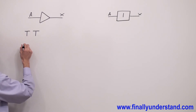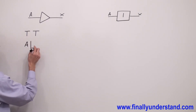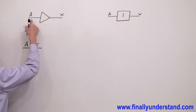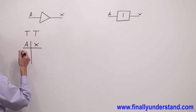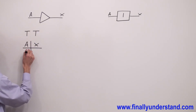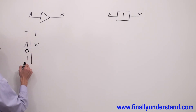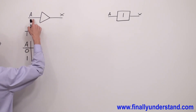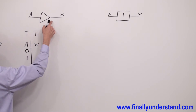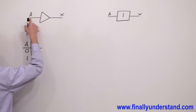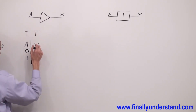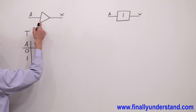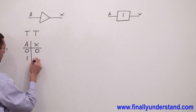I have just one input, input A, and I have one output, output X. Because I have just one input, I can apply only two combinations: combination 0 and combination 1. Gate Yes simply transfers whatever is at the input to the output. So if I apply 0 to the input, the output is going to be also 0. And if I apply 1 to the input, the output is going to also be equal to 1.